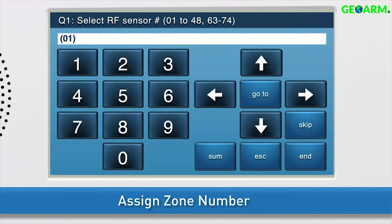If you would like to change this sensor to a different zone number, press the right arrow to change the zone number, or type the desired number in using the number keys on screen.